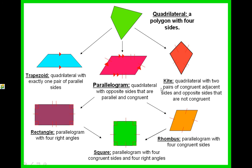A kite is a quadrilateral with two pairs of congruent adjacent sides and opposite sides that are not congruent. Here you have two adjacent sides that are congruent, represented by the one line, and down here, represented by the two lines, those are congruent as well. The top sides are not congruent to the bottom sides, but the adjacent sides are. It looks like a kite.